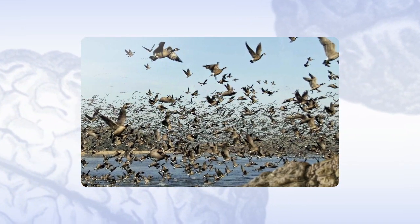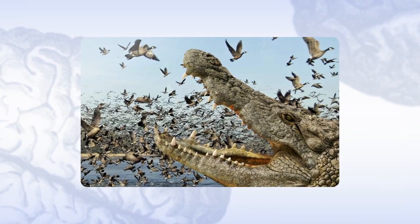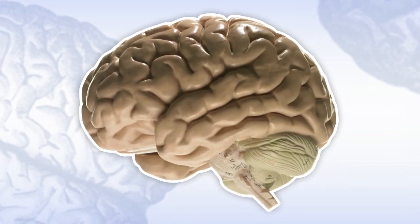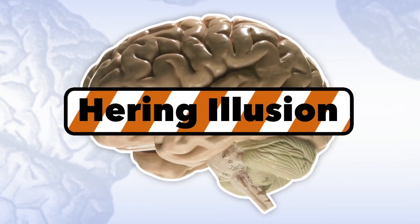This trait helped early humans survive encounters with fast predators, or at the very least, avoid running into trees. These shortcuts are also at the heart of how visual illusions fool our brains. Take the herring illusion, for example.